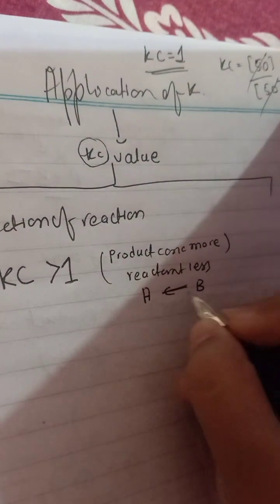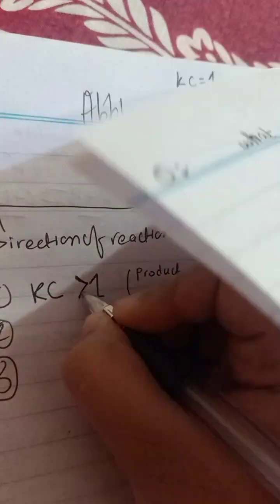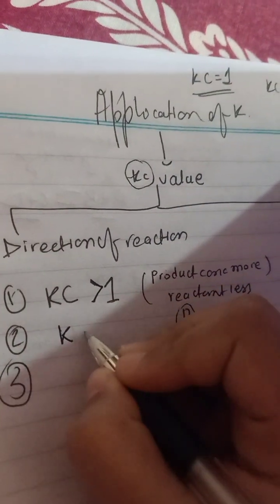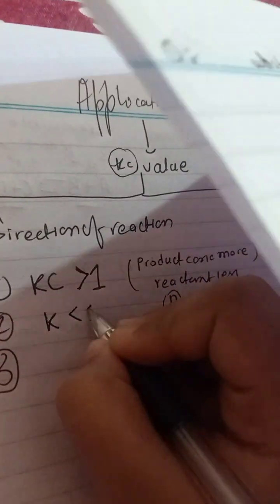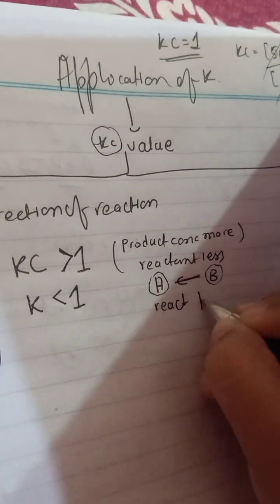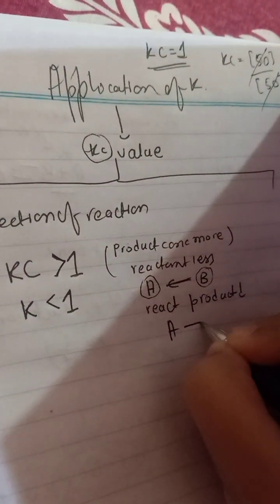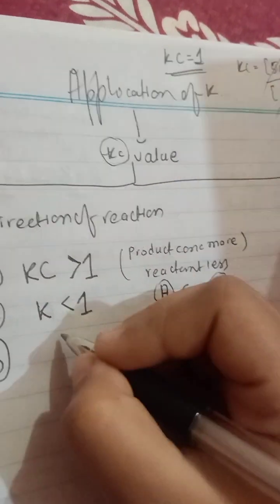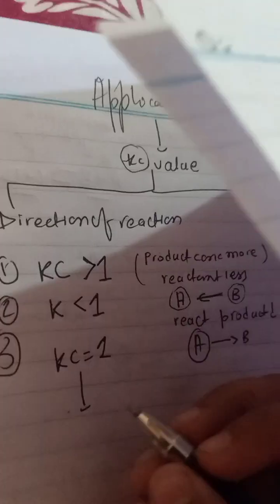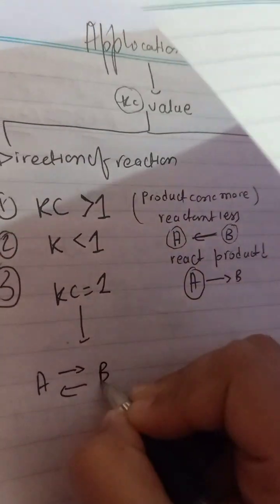When Kc is more than one, the product concentration is more and reactant concentration is less, so the reaction favors the forward direction. If Kc is less than one, the reactant concentration is more and product concentration is less, meaning the reaction is more toward the reactants. Third, if Kc is equal to one, both product and reactant concentrations are equal.